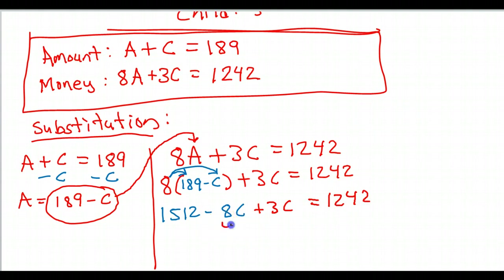Plus 3C is equal to 1,242. So I've got these like terms right here. I like to put those together. I've got 1,512, negative 8, positive 3, that's negative 5C, is equal to 1,242.